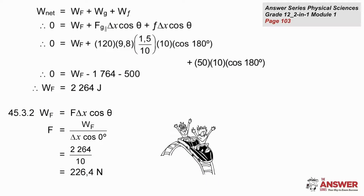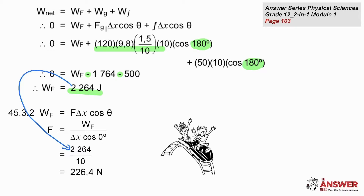Here are the substitutions. The parallel component of the gravitational force is mg sin alpha, and sin alpha is the fraction 1.5 over 10, which comes from the geometry of the situation. The parallel component of the gravitational force is in the opposite direction to the change in position, as is the frictional force, so both those amounts of work are negative. From the sum of works, that gives us the work done by the applied force of 2264 joules. We can substitute that amount into the work formula to find the size of the applied force acting on that wheelchair.